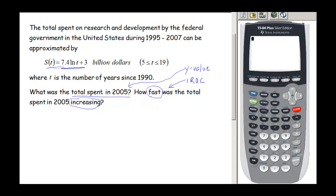Both questions mention 2005, so it's helpful to know what value of t that corresponds to. They tell us that 1990 corresponds to t equals 0. Since 2005 is 15 years after 1990, this gives us t equals 15.